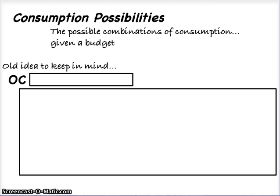We're going to start off with the idea of consumption possibilities. That may sound familiar — we've studied production possibilities earlier in the class. This is a very similar concept. With consumption possibilities, we're looking at the different possible combinations of consumption for a household given a set budget. Some textbooks will actually go into something called a budget line, which takes two different products and the price of each product and puts it on a graph, like you would see with a Production Possibilities Frontier.